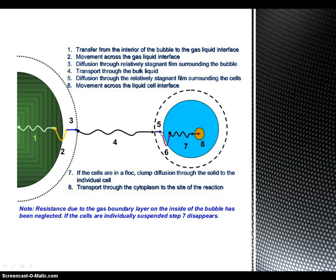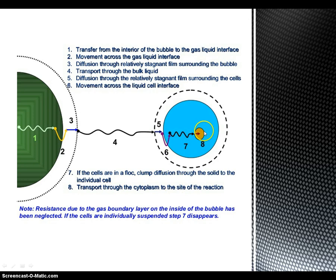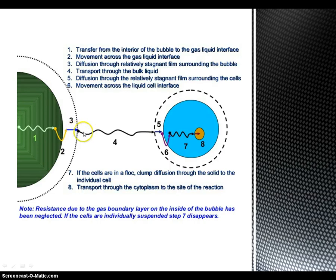The cell interface step involves diffusion across the cell interface. The next step is diffusion into the cytoplasm. These steps together describe the oxygen transfer pathway. The steps include: the liquid interface, movement, diffusion, and bulk liquid transfer.